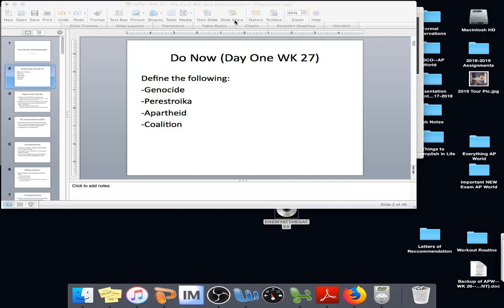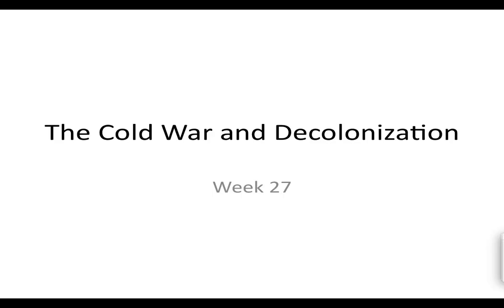Next to Cold War, you need to write 1947 to 1991. That's how long the Cold War is. You're going to write its causes, or how it came about — there are going to be five of them.